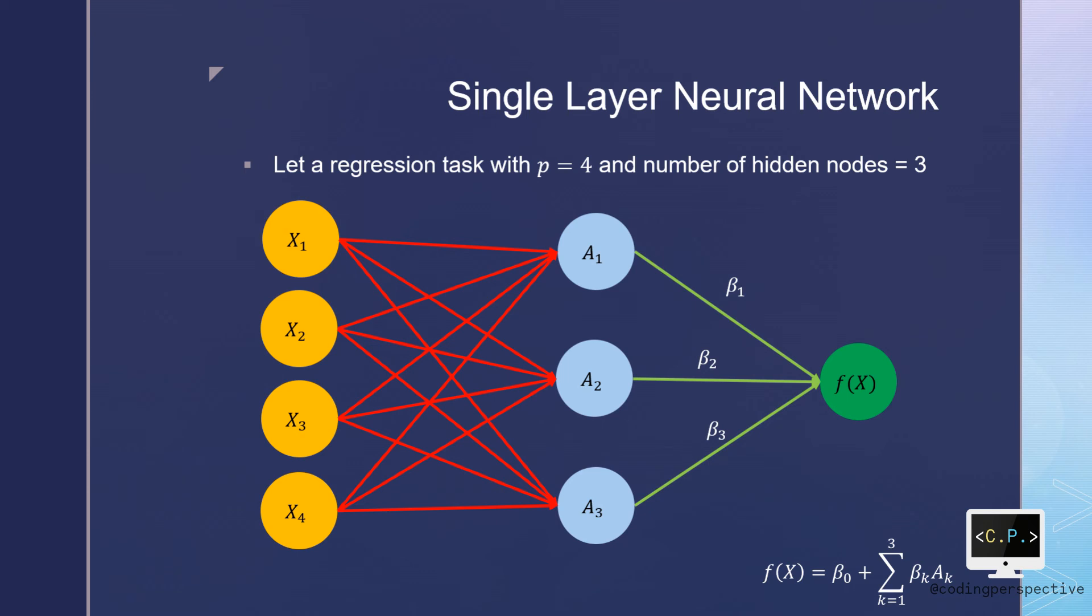We have beta 1, beta 2, and beta 3 for the links between hidden layer and output layer. For the links between input and hidden layers, we have weights wij for each arc. Let us go from output to the input layer. The model calculates f(x) as beta_0 plus beta_k times a_k summed over k. According to the model, each a_k is calculated as w_k0 plus w_kj times x_j summed over j. Note that we have a non-linear activation function g that is specified beforehand.